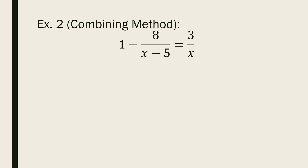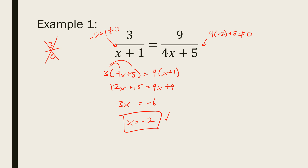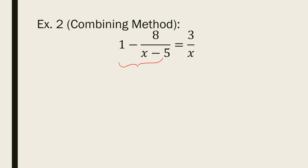Example 2 — I'll show it with two different methods. As with complex fractions, sometimes you want one method, sometimes the other. The first is called the combining method. The combining method relies on using addition and subtraction skills so that instead of having two things on one side, you get just one — because if you get it down to one thing, you can use cross multiplication and it's easy. Clearly the LCD on the left-hand side is x minus 5.